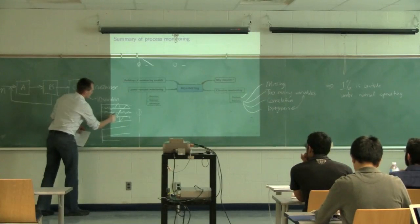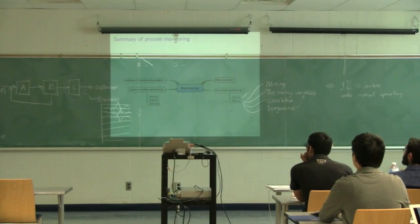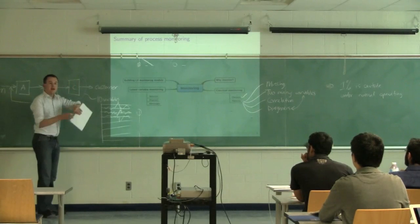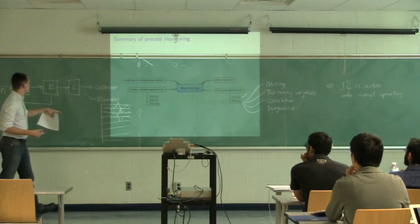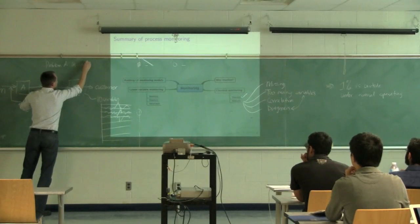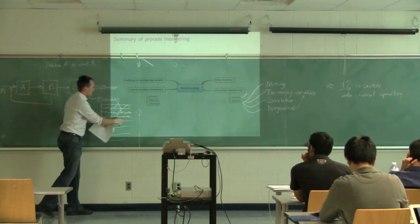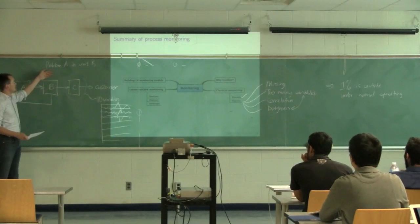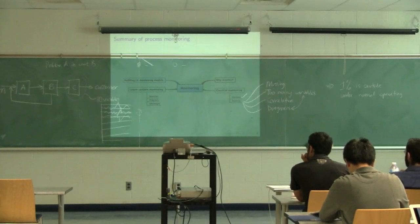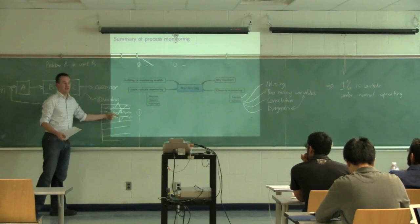In a very simple case with 10 variables, the operator sees this variable starting to move down, this one moves up, this one moves up. If that operator is extremely experienced, they may know right away: when these variables behave in that pattern—that fingerprint—it's due to problem A in unit B. They're using their knowledge of the process to figure that out. There might be a different signature in a different group of variables that isolates problem X in a different unit. So you can see how this is very much experience-driven.